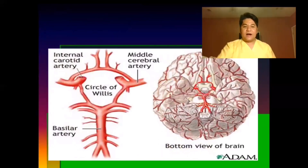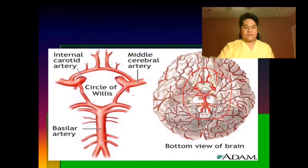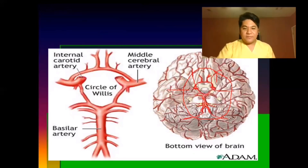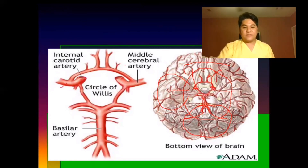The blood supply of the brain comes from the Circle of Willis, which includes the internal carotid artery, the middle cerebral artery, and the basilar artery. The middle cerebral artery supplies the middle portion, the internal carotid supplies the frontal area, and the basilar artery supplies the posterior portion. Occlusion or aneurysm in these arteries affects the corresponding brain area.